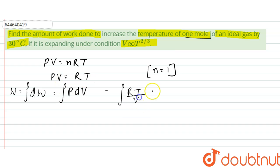Since V is directly proportional to T to the power 2/3, we can write V equals some constant, let's say k, times T to the power 2/3.